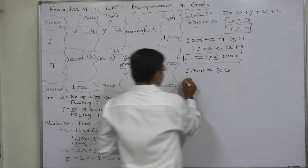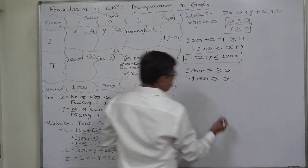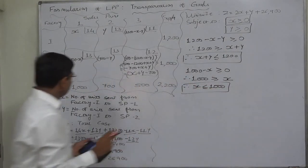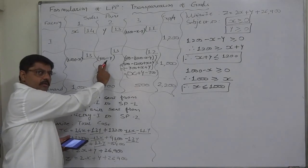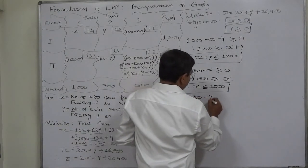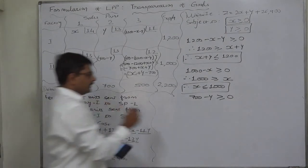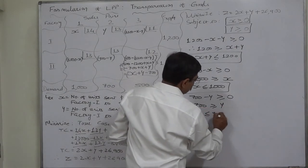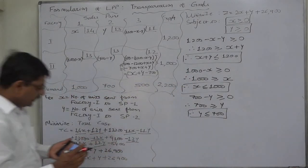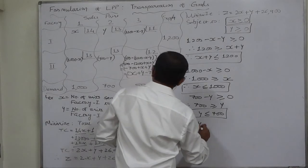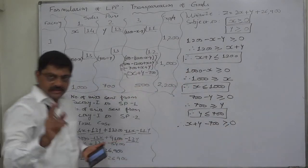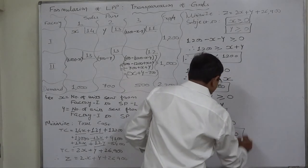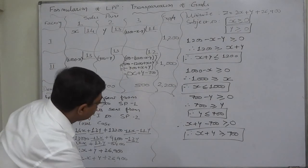Similarly, 700 − y ≥ 0 gives y ≤ 700. And x + y − 700 is also a non-negative quantity, so x + y − 700 ≥ 0, giving x + y ≥ 700. All these are constraints to be taken into consideration while minimizing the objective function z = 2x + y + 26900.